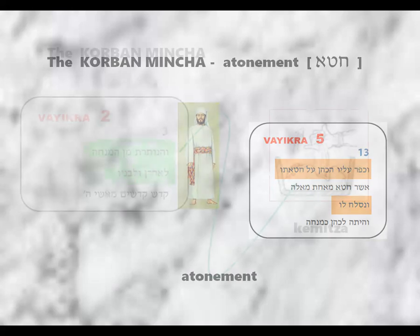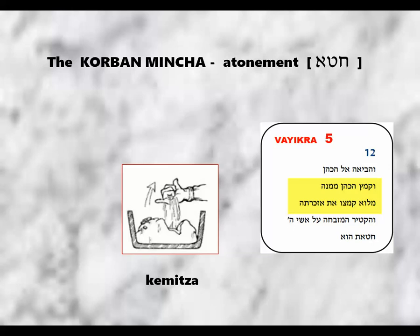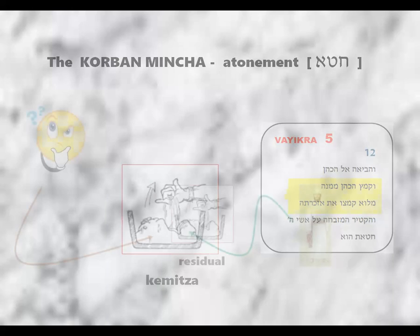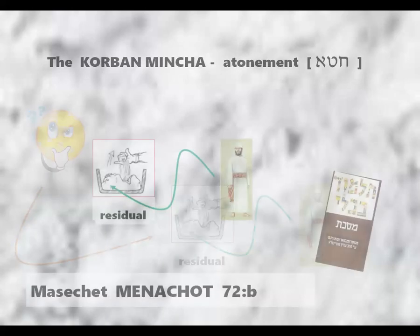If we refer back to the original account of the Karban Mincha in Vayikra Perek 2, we are told that the remainder of the flour offering was retained by the Kohen for personal use, with the requirement that it be treated as Kodesh Kodeshim. In Vayikra 5:12, the Pasukim dealing with the Karban Mincha that came as an Atonement, while mention is made of the Khmitsa process, no mention is made as to what was done with the residual flour. This is an issue addressed in the Talmud Bavli, Masechta Menachot 72b.